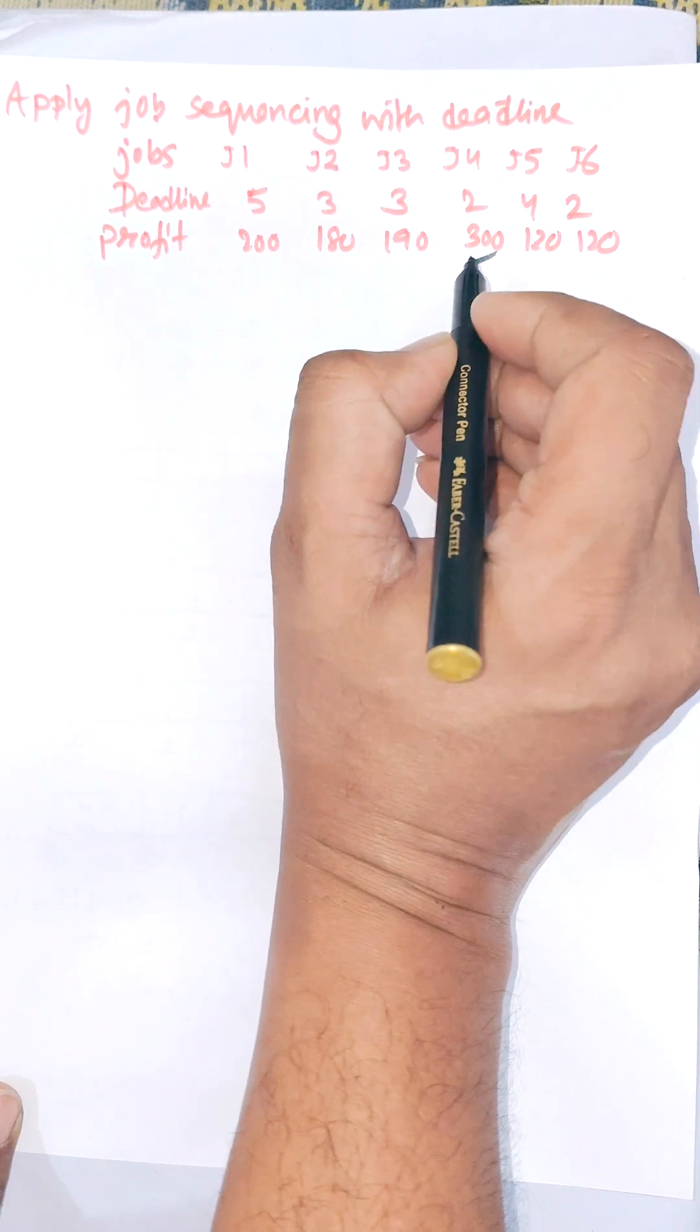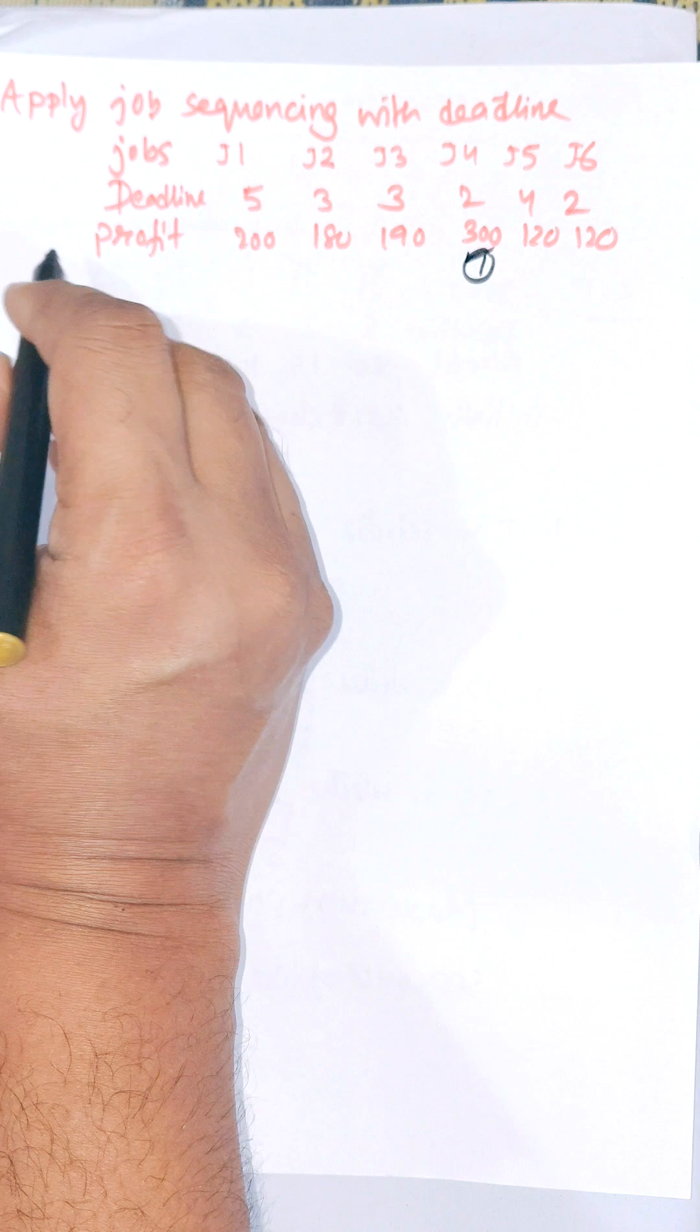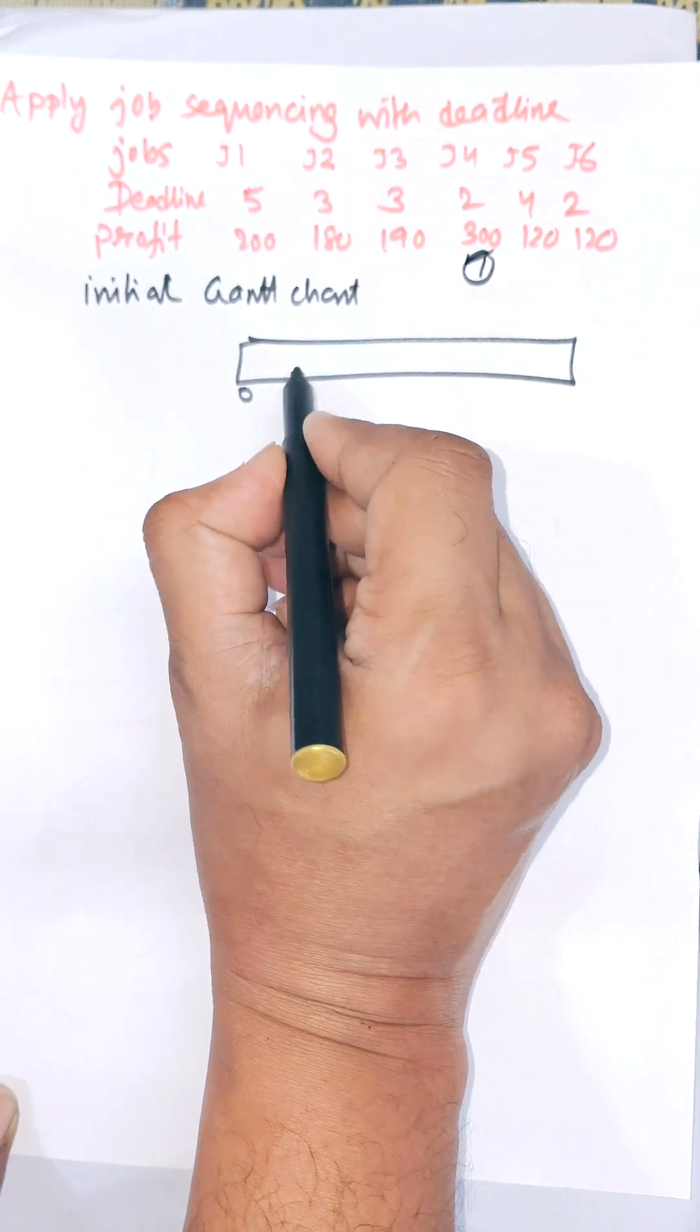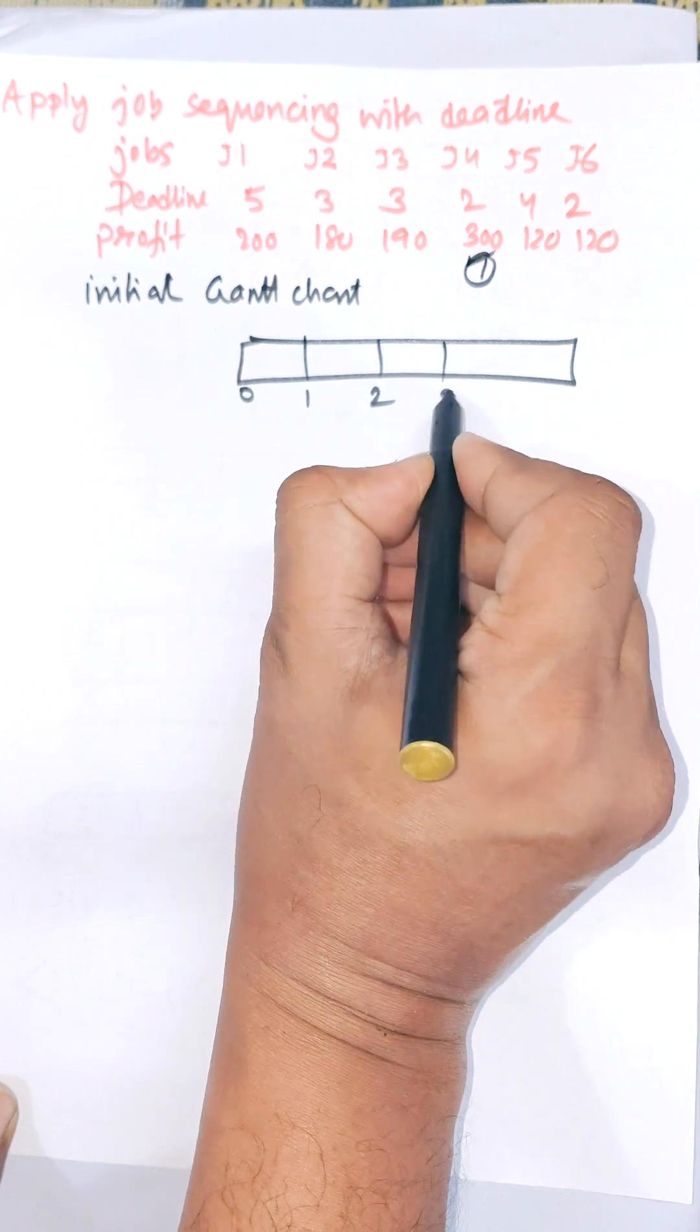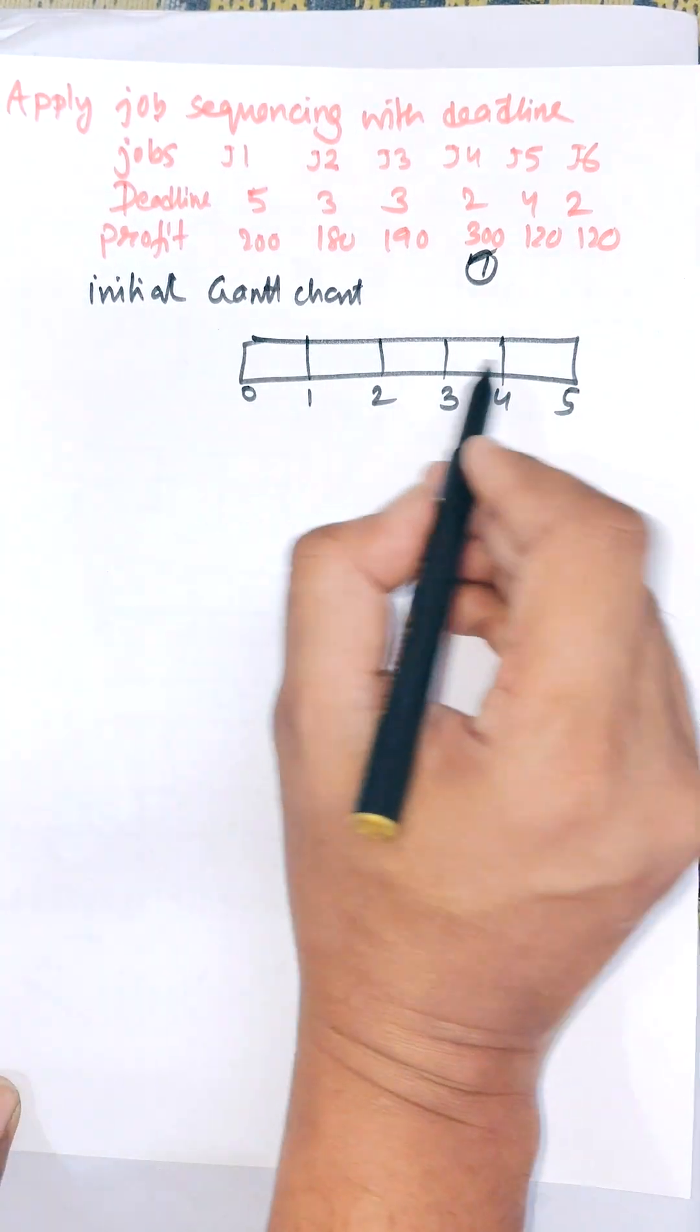That is number one is J4. Here, initially natural consists of maximum five limit of deadline: 0 to 1, 1 to 2, 2 to 3, 3 to 4, and 4 to 5. Initially this is the natural chart. And now first job is J4 is selected because its maximum profit is 300.